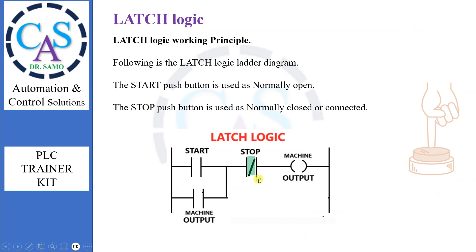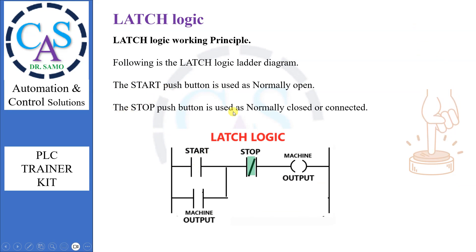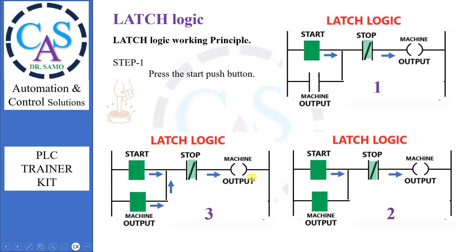Latch logic working principle. The start push button is used as normally open. The stop push button is used as normally closed or connected. The start button is used to start latching, and the stop button is used to stop latching. Step 1: Press the start push button. When we press the start push button, our output will get the signal. The latch will read the output and make itself on — it will memorize it. The signal will also change the route and come through latch. Now latch started.